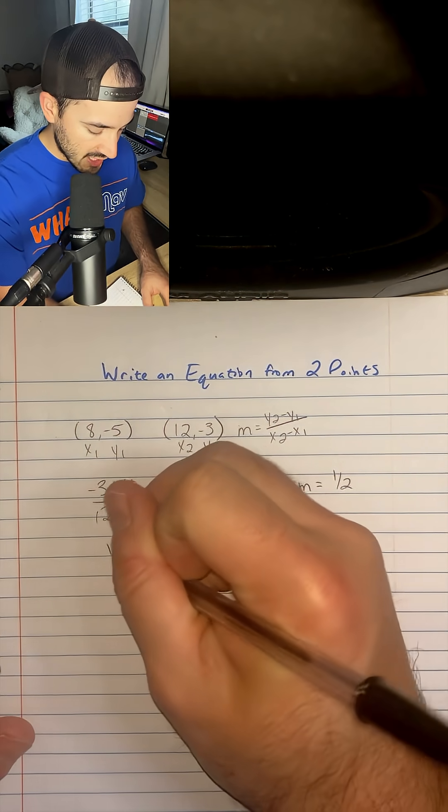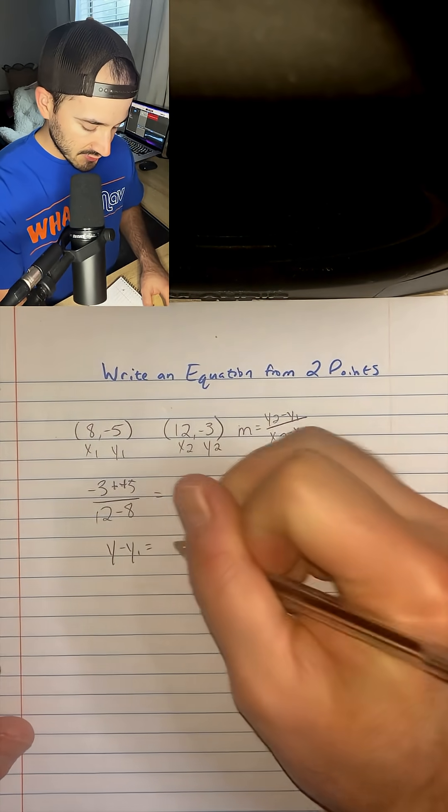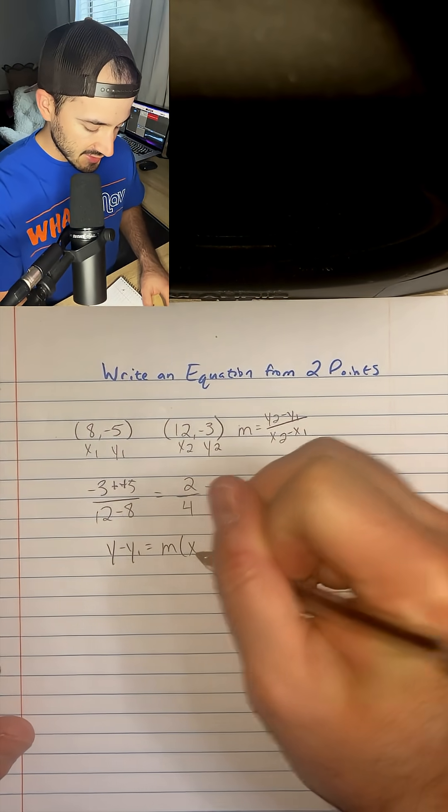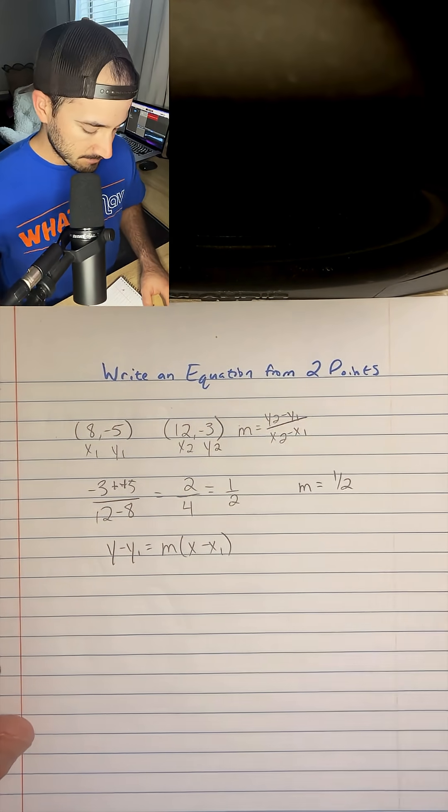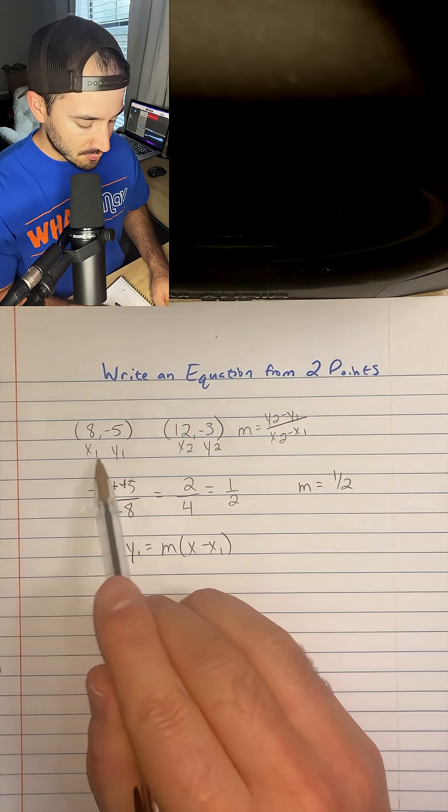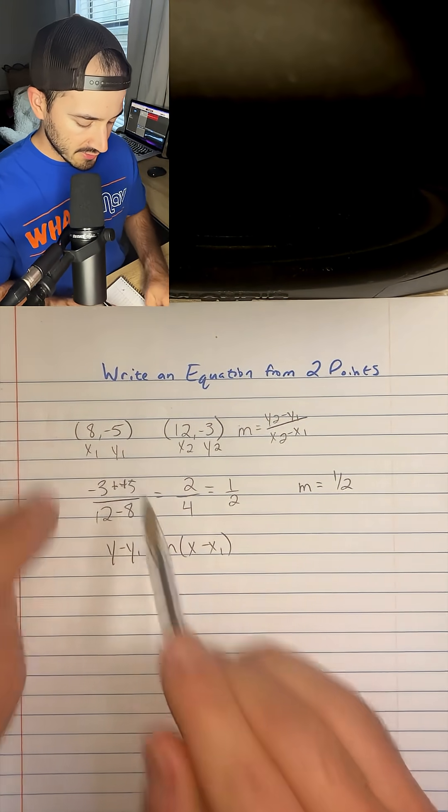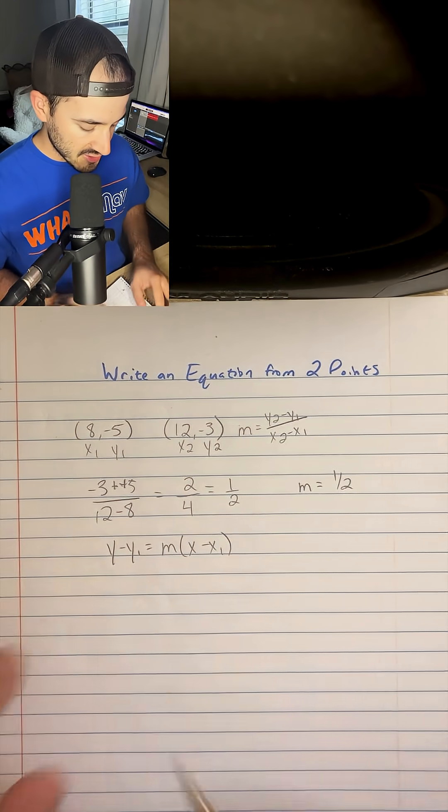So point-slope form is y minus y1 equals m times the quantity x minus x1. So we already found the slope and I'm going to use x1 and y1 for my first point to plug in to our equation.